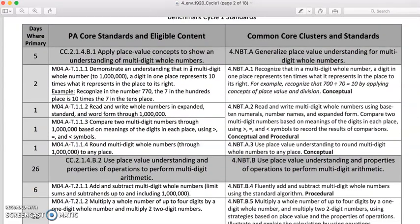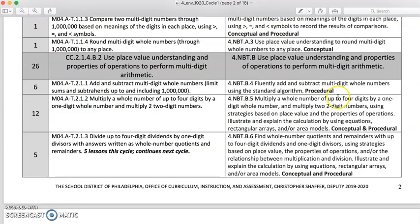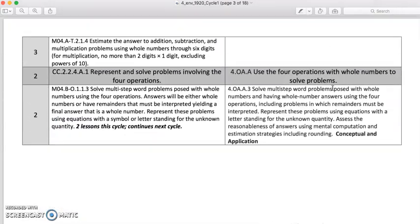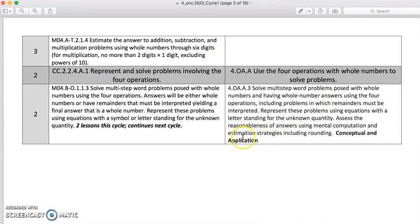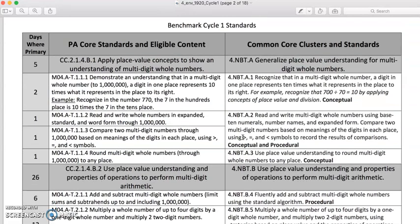The other new thing about this page is that it lists for you this bold language: conceptual, procedural, and application. Hopefully those words ring a bell. They are the three aspects of rigor. You likely talked at your school a lot about rigor last year. It is one of the three Common Core shifts: focus, coherence, and rigor. And when you think about rigor, you think about that three-legged stool. We want to achieve a balance of all three aspects as we teach math.